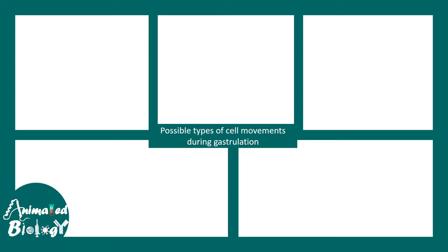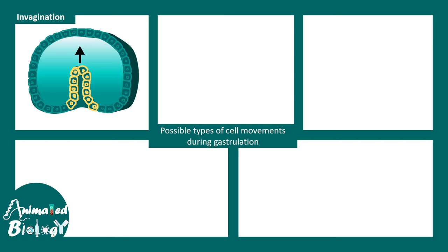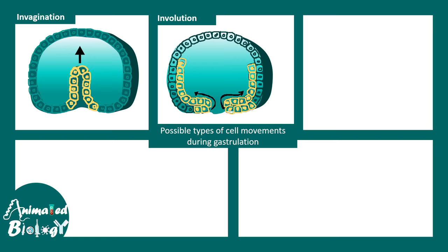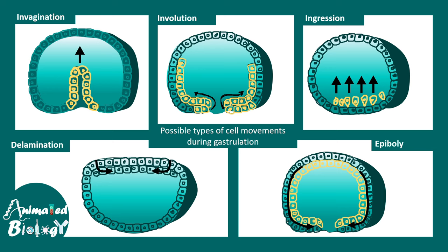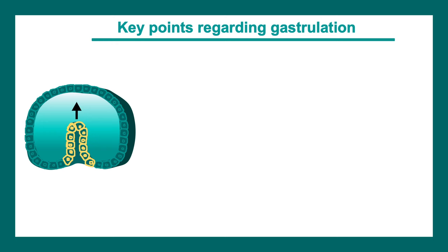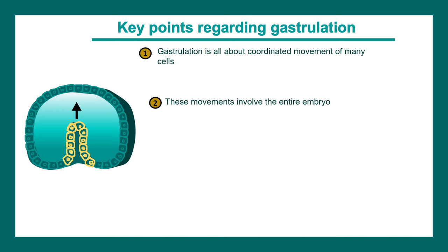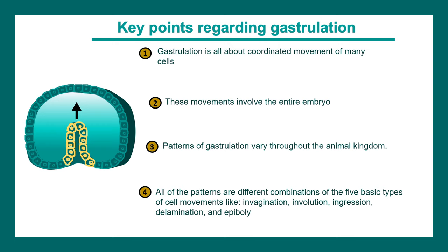Gastrulation is a process by which different cells of the embryo move to new locations and form different types of cells. There are different morphogenetic movements that happen, like invagination where cells move inward, involution where one layer of cells grows inside another defined layer, ingression, delamination, and epiboly. The key feature of gastrulation is coordinated movement of cells involving the entire embryo. The patterns of gastrulation vary widely across the animal kingdom, and gastrulation is a combination of these basic morphogenetic movements.